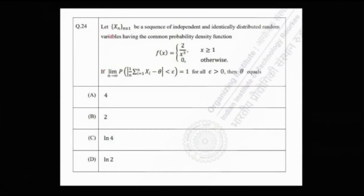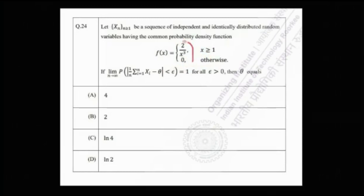The problem says: let Xn be a sequence of independent and identically distributed random variables having the common probability density function f(x) = 2/x³ if x ≥ 1, and 0 otherwise. This is the PDF of all the Xᵢs.